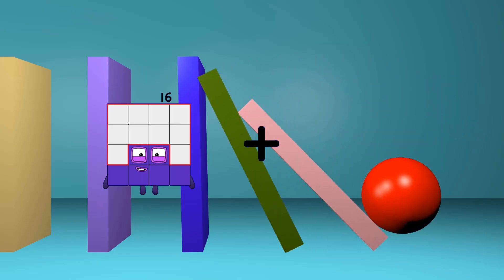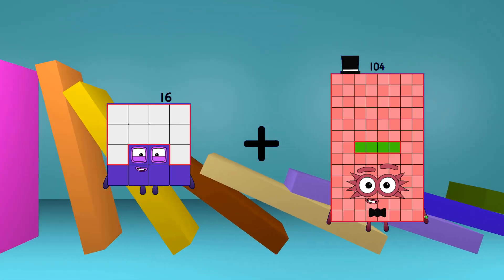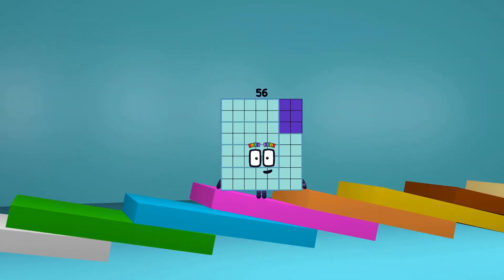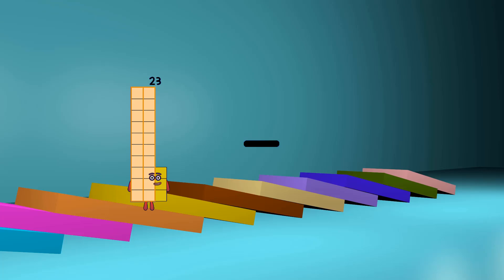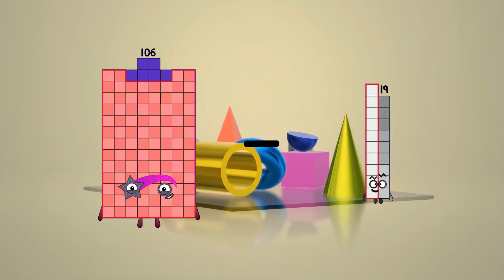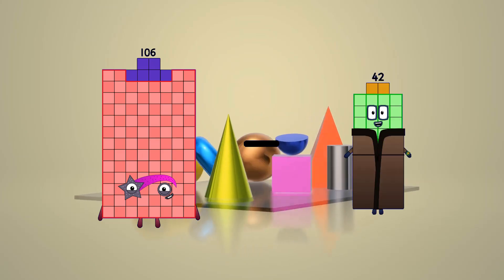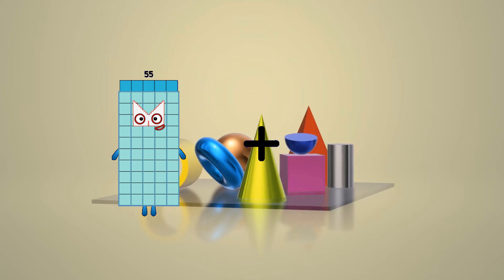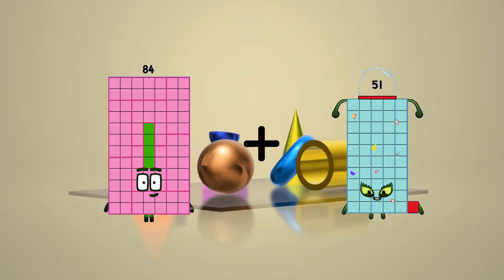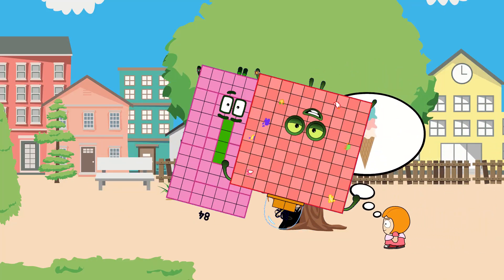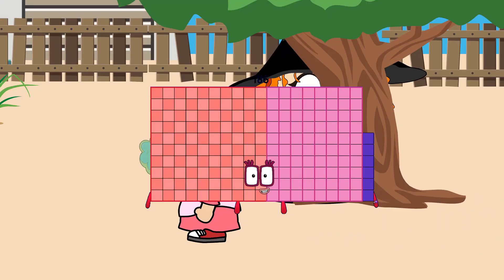16 plus 40 equals 56, 106 minus 42 equals 64, 84 plus 102 equals 186.